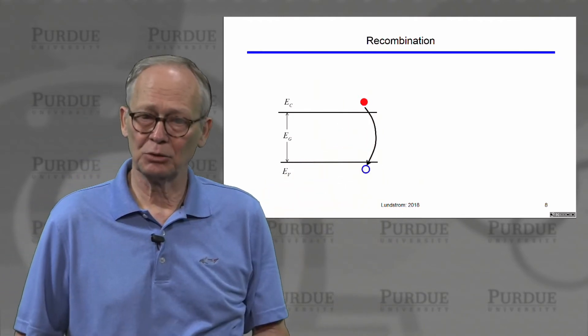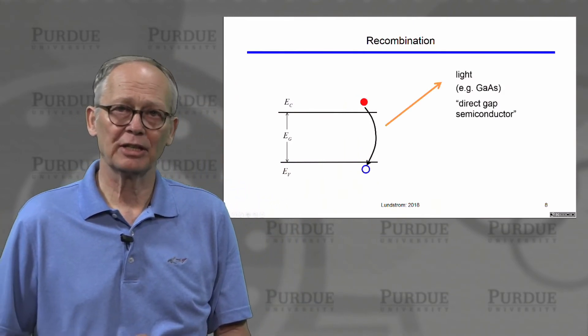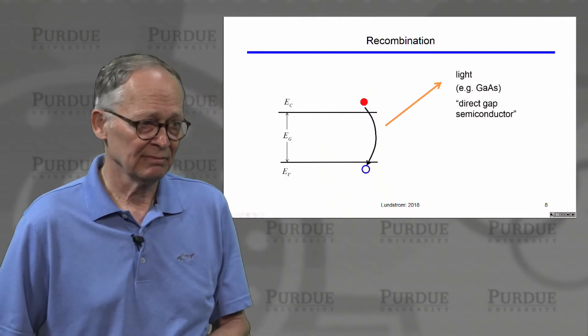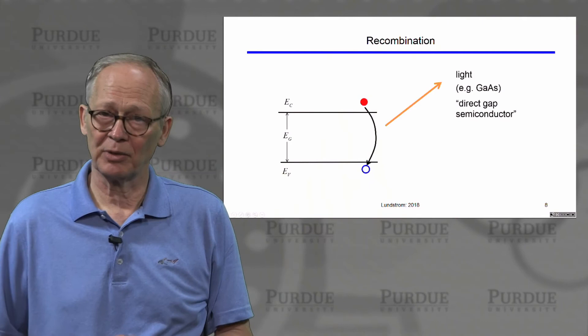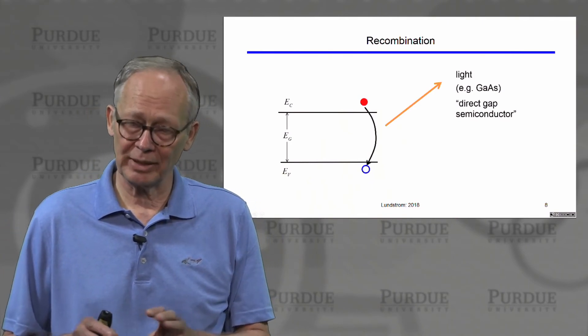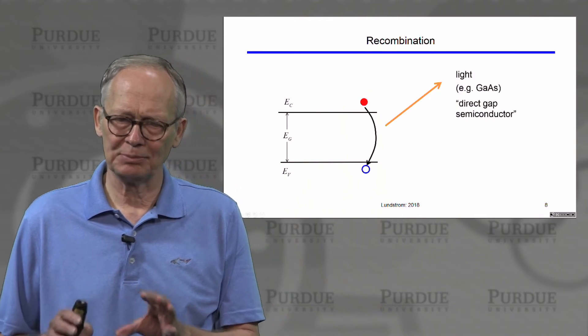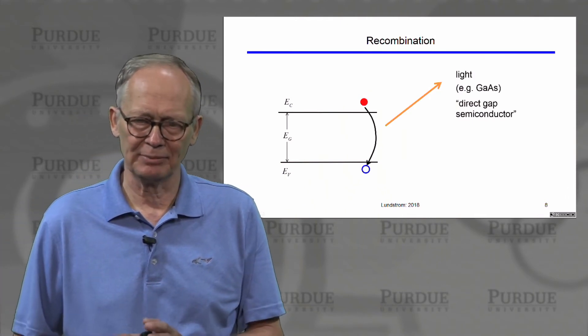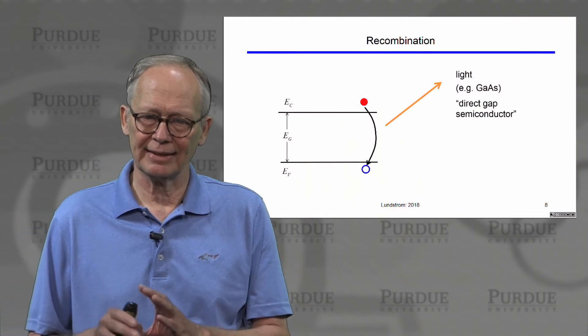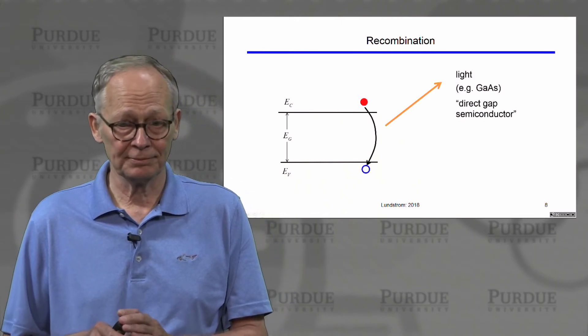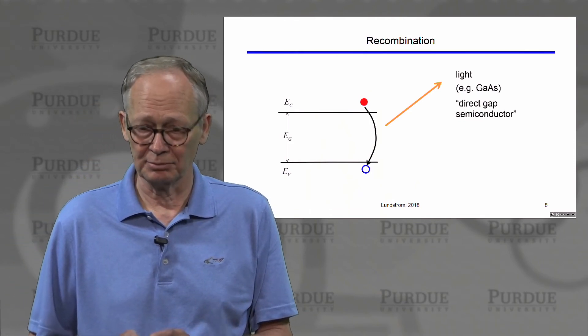Now there's some energy that has to be given up when the electron drops down to the valence band. That energy has to go somewhere and there are two possibilities. That energy can go into light, we can emit photons. This is what happens in some semiconductors. For example, in gallium arsenide, the 3-5 semiconductor that we talked about. This is called a direct gap semiconductor and we'll talk about what that means a little bit later. In semiconductors like this, the excess energy is given up into light. And this is a way that we make light emitting diodes and lasers and other devices from semiconductors.